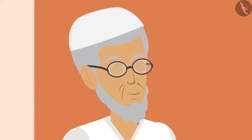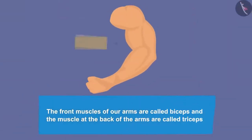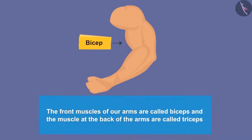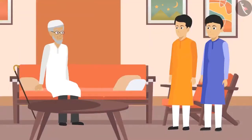'Well done! The front muscles are called biceps and the muscles at the back of the arms are called triceps.'